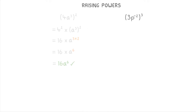For the very last one, 3p to the power of negative 2, all cubed, we need to apply that power of 3 to the number and letter individually. So 3 cubed times p to the power of negative 2 times 3, which is 27 times p to the power of negative 6, or just 27p to the power of negative 6.